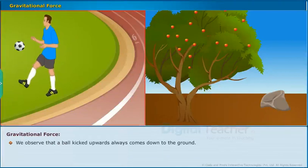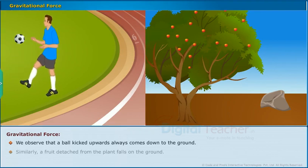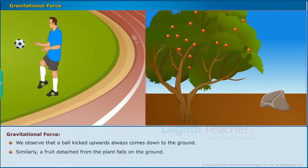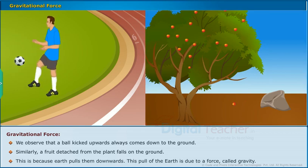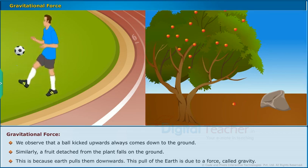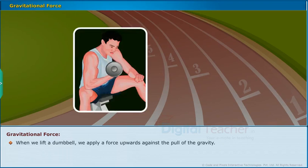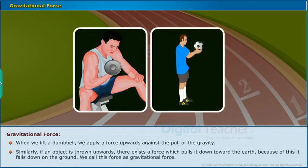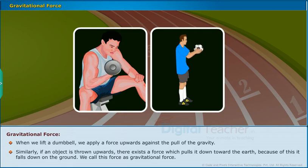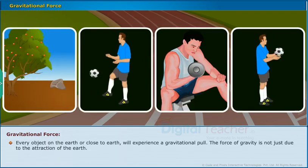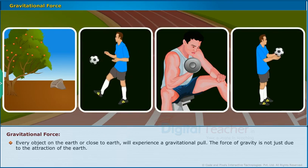We observe that a ball kicked upwards always comes down to the ground. Similarly, a fruit detached from a plant falls on the ground. This is because the earth pulls them downwards — this pull of the earth is due to a force called gravity. When we lift a dumbbell, we apply a force upwards against the pull of gravity. Similarly, if an object is thrown upwards, there exists a force which pulls it down towards the earth. Because of this, it falls down on the ground. We call this force gravitational force.